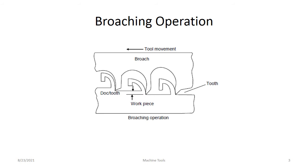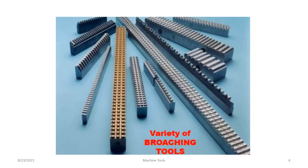Next is the broaching operation. From this figure you can clearly understand the broaching operation — the cutting action of the broach. In the broaching operation you can see the workpiece, the tooth, the broach, and the tool movement shown in the figure. Different types of broaching tools are used in industries.